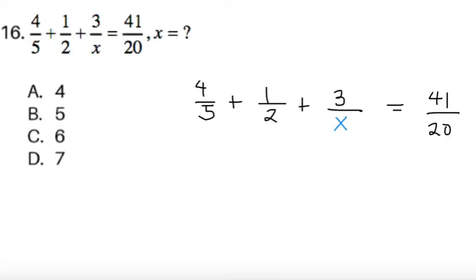For item 16, 4 fifths plus 1 half plus 3 over x equals 41 over 20. What is the value of x? Instead of solving directly for x, which you can do, we can try another approach. We have four choices here, so let's try each of them. If x equals 4, then 3 over x is 3 fourths.